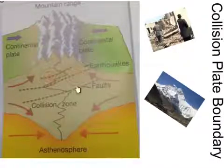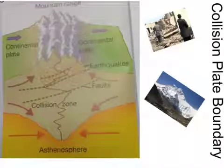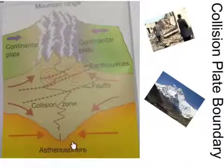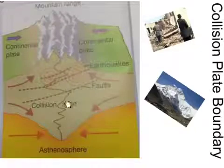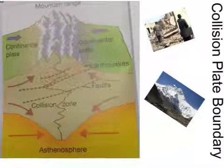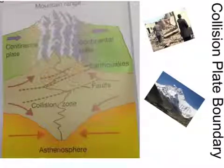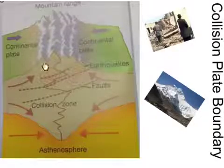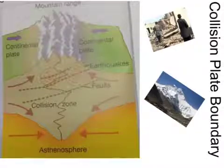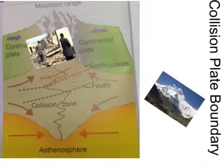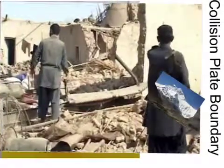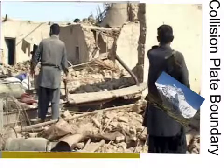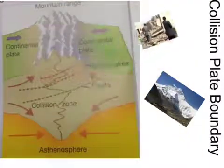In a collision zone you will get earthquakes, but volcanoes are exceptionally rare. You don't normally get volcanoes because the majority of the fault is always quite a distance from the surface. You do get very destructive earthquakes because there is an awful lot of pressure forcing the two sections together, and there is also the potential for landslides — such as the Pakistan earthquake, which was quite severe and caused an awful lot of damage.